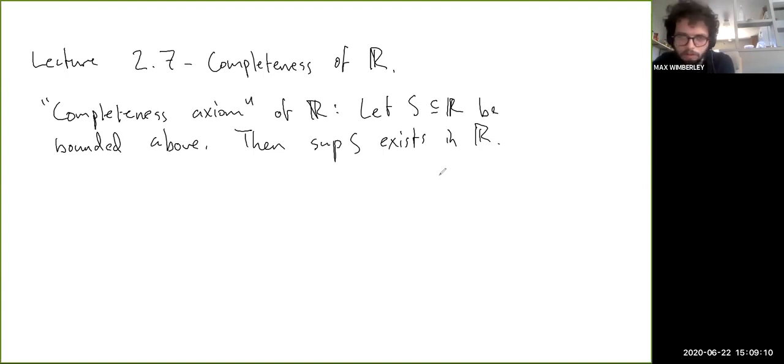Any other construction you could make would be isomorphic, basically, if you know what that word means. So that's how you get the real numbers. The reason I put this in quotes is because we take this as an axiom because we're not going to be actually constructing the real numbers.